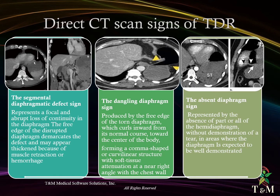Direct CT scan signs of traumatic diaphragmatic rupture: the segmental diaphragmatic defect sign represents a focal and abrupt loss of continuity in the diaphragm; the free edge of the disrupted diaphragm demarcates the defect and may appear thickened because of muscle retraction or hemorrhage. The dangling diaphragmatic sign is produced by the free edge of the torn diaphragm, which curls inward from its normal course towards the center of the body, forming a comma-shaped or curvilinear structure with soft tissue attenuation at a right angle to the chest wall. The absent diaphragm sign is represented by the absence of part or all of the hemidiaphragm without demonstration of a tear, in areas where the diaphragm is expected to be well demonstrated.